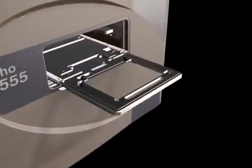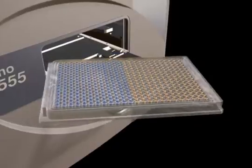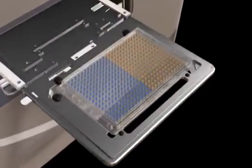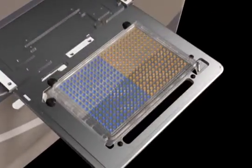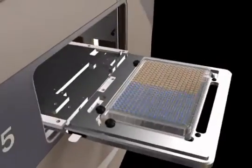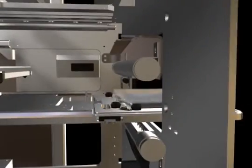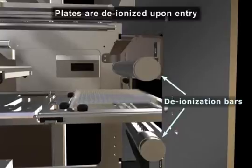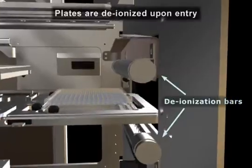The ECHO system presents a source plate gripper and robotically or manually a filled source plate is placed upon the extended platform. The extended gripper pulls the plate into the ECHO system where it is deionized to ensure straight flight of the droplets.